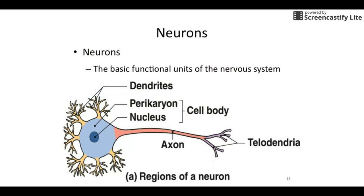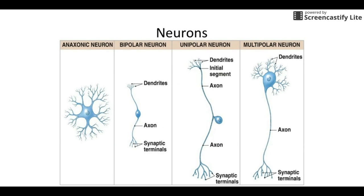The part where we're going to spend most of this unit on is talking about the neurons. The neurons obviously send the signals — they're the most important part. They're often referred to as the basic functional units because they're the ones that can actually send the signals. Here's a big overview; we're going to get into all the different pieces like axon, dendrite, and cell body through the next few slides.